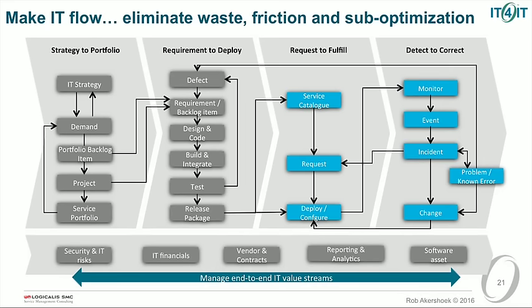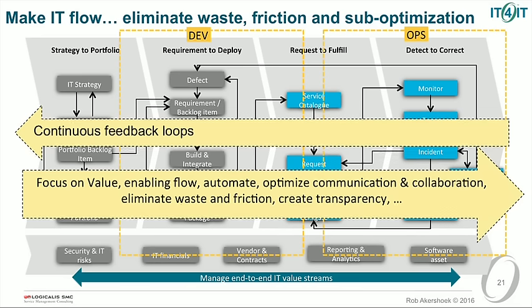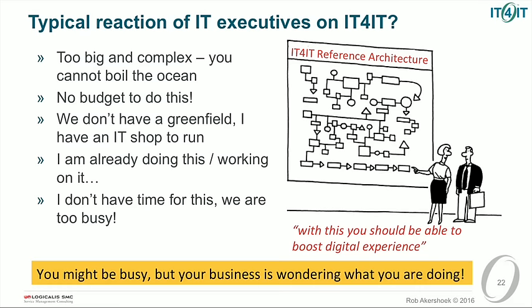We would like to explain to the IT function: let's make IT flow end-to-end — from strategy to portfolio where new demands come in, through development and testing, service requests and subscriptions, and then monitoring and acting on incidents and security issues. We cover the DEV and the OPS, with a continuous feedback loop from production. We want to focus on value, eliminate waste, automate, optimize, and get more transparency. But then most CIOs or executives say: it's really nice, but it's much too big. We cannot boil the ocean — it's too complex, too big, and we have no budget to implement this.